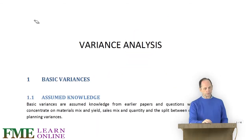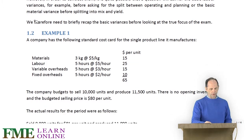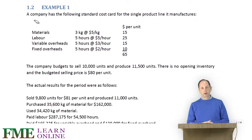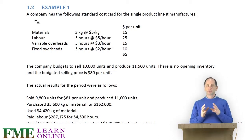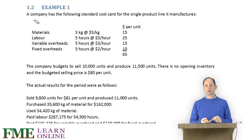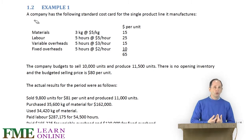So what we are going to do to start with is just recap those. We are going to take Example 1, which has some information about a standard cost card and the actual results, and work through all of the variances. Bear in mind this is a recap of assumed knowledge. The main ones to be happy with are the labour rate and efficiency, the material usage and price, and the sales volume variance. I will also go through the fixed overhead variances and the split of the fixed overhead volume variance under absorption costing, just in case people are concerned about them.